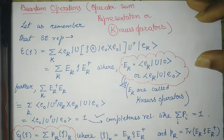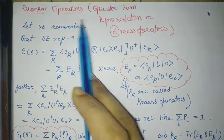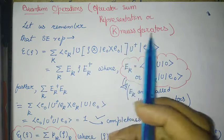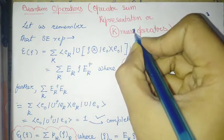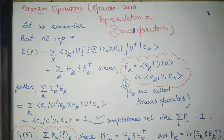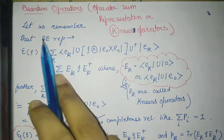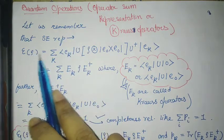Hello friends. In this video I will be discussing quantum operations, continuing from my previous video. This will be a discussion regarding the Kraus operators. Kraus operators form a very important part of representing quantum operations. In the previous video we saw that we can couple the system with the environment, evolve the joint system-environment using unitaries, and then trace out the environment part — that was a valid quantum operation representation under certain assumptions. In this video I will be recapping from there.